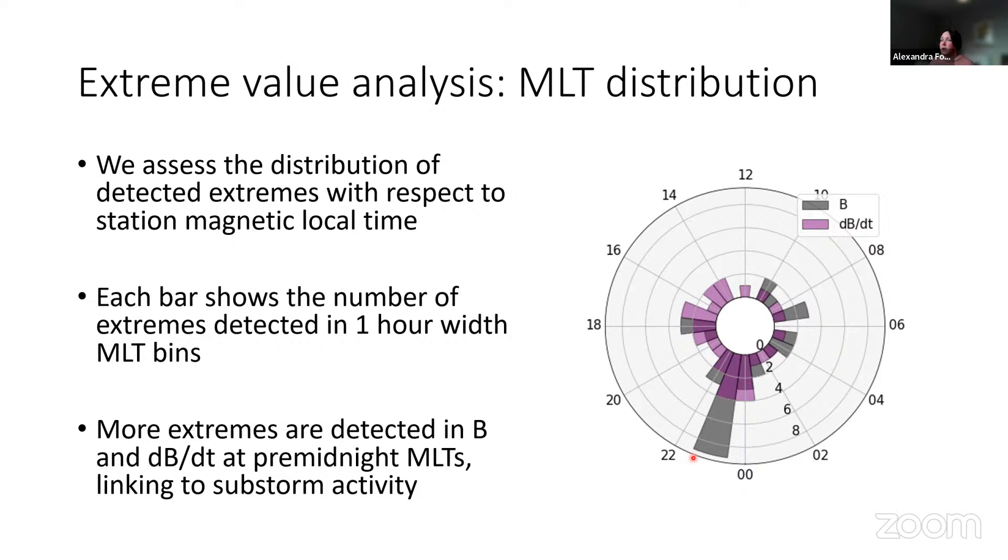So having detected the extremes, we can look at their distribution in magnetic local time. So here I have a plot of magnetic local time histograms. We have noon at the top, dawn on the right, dusk on the left and midnight at the bottom. Each bar, the radius of the bar shows the number of extremes detected in a one hour width magnetic local time bin with B in grey and dB/dt in purple. And what we can see is more extremes are detected, particularly for B in the pre-midnight sector. And that's where most of the substorm onsets are happening. So we're linking back to substorm activity here. So that's a really interesting result. We'll go back to the causes, as I said, statistically at the end. But it's interesting to know that we're seeing as Ireland and the Valencia station rotates into and out of that pre-midnight sector, as the earth rotates, we're seeing more extremes in the pre-midnight sector.